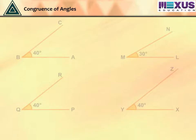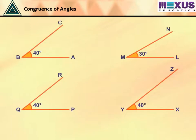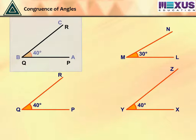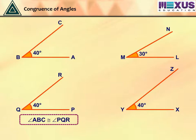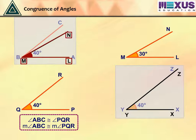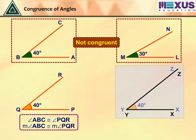Let us now see the idea of congruence in angles. Observe the four angles. Trace angle PQR on angle ABC. For this, place Q on B and QP along ray BA. We observe that angle PQR matches exactly with angle ABC. So, we can write it as angle ABC is congruent to angle PQR. Also, the measurement of angle ABC is equal to the measurement of angle PQR. We notice that angle LMN does not cover angle ABC exactly. Therefore, they are not congruent because their measurement is different.